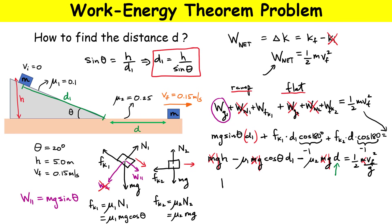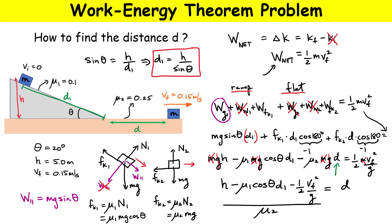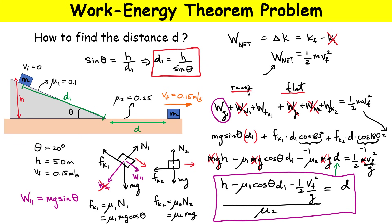The final expression is: d = [h − μ1·cos θ · D1 − v_final² / (2g)] / μ2. It's a complicated-looking expression but we know all the terms: height h, μ1, angle θ, D1, final velocity, g, and μ2. The expression makes physical sense — larger h gives larger d, and smaller μ2 gives a much larger sliding distance.